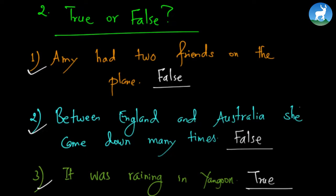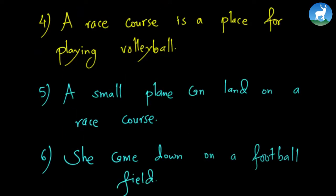Let's solve some more questions. The first one that we have is, a race course is a place for playing volleyball. Of course not. A race course is where horse riding takes place or some kind of race is done. A small plane can land on a race course. I think that is true because Amy actually landed her plane on a race course. Moving on, she came down on a football field. False, she came down on a race course.